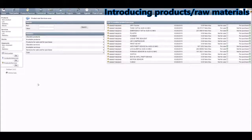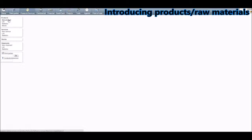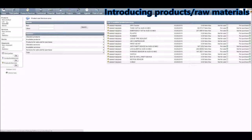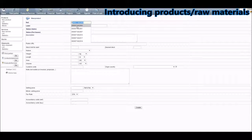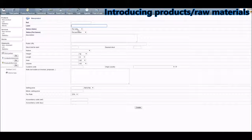After creating the company, you will need to create the company's products. For that, click on Products/Services. After clicking there, click on New Product and this screen will appear. Insert all the relevant information to create a new product, such as the reference — which is the reference you'll search the product by — and the label, which is the name. Then its status: if it is for sale, it's a manufactured product.